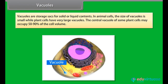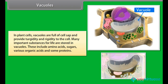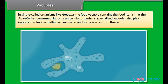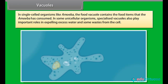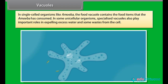Vacuoles are storage sacs for solid or liquid contents. In animal cells the size of vacuoles is small, while plant cells have very large vacuoles — the central vacuole of some plant cells may occupy 50–90% of the cell volume. In plant cells, vacuoles are full of cell sap and provide turgidity and rigidity to the cell. Many important substances such as amino acids, sugars, organic acids and some proteins are stored in vacuoles. In unicellular organisms like amoeba, the food vacuole contains consumed food items. Specialized vacuoles also play important roles in expelling excess water and wastes from the cell.